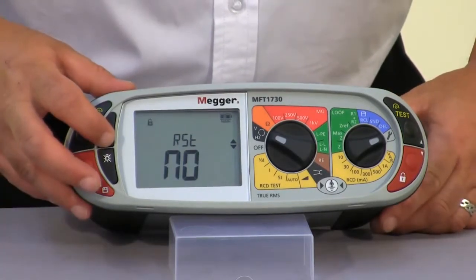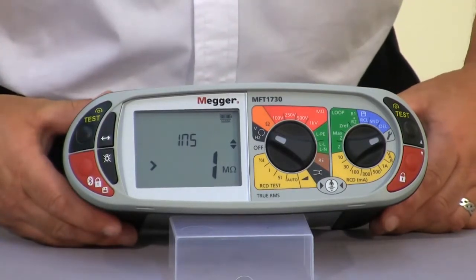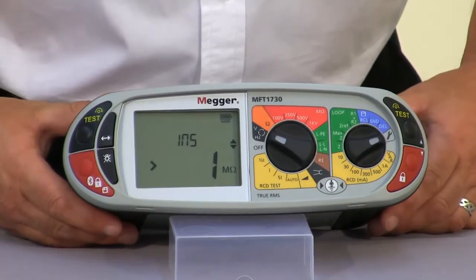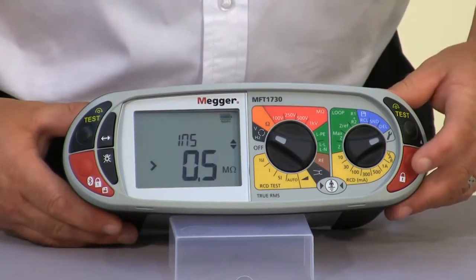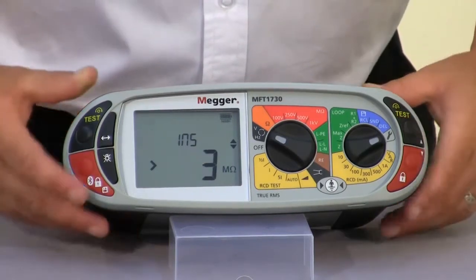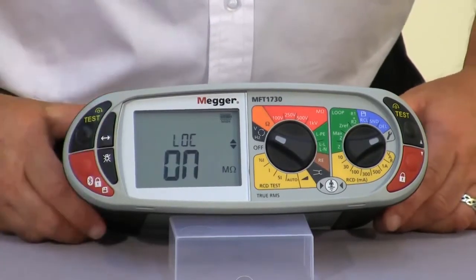I'm going to select our function key which takes us through to our insulation limit alarms. The limit alarms allow us to set a value above which when carrying out an insulation test, the unit will give you an audible indication to say that the reading is above the preset value. As you can see at the moment it's set at one megaohm. I can actually go in and alter this value, and then press the save button at any time, and then move on to the next setting.